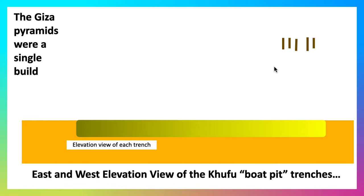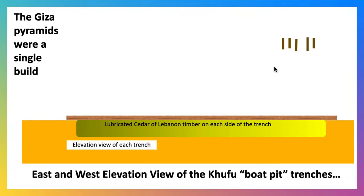Here's a side view of the trenches. We're going to put lubricated cedar of Lebanon on top of each one. A bunch of cedar of Lebanon was imported into Old Kingdom Egypt, there are many records of that.